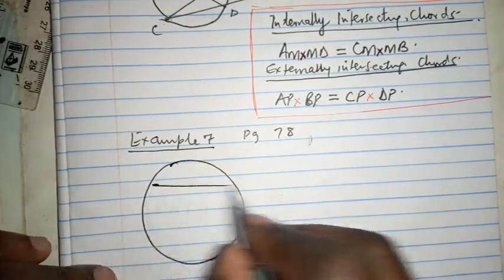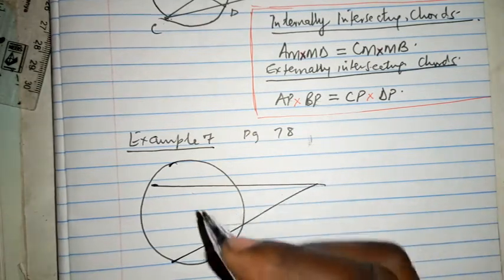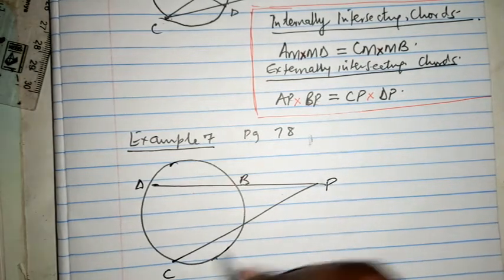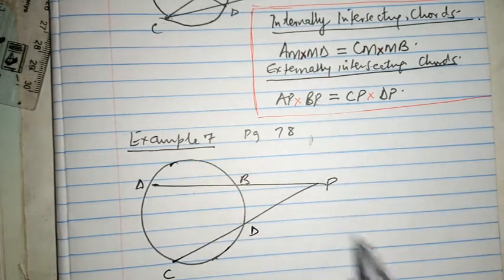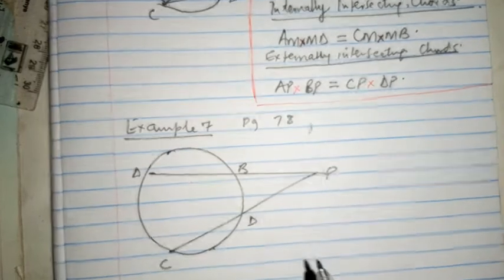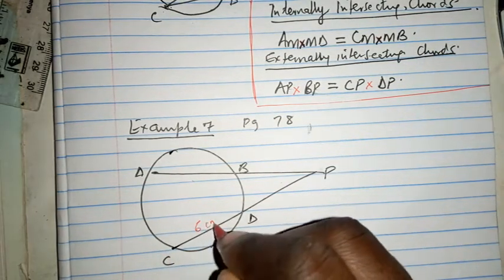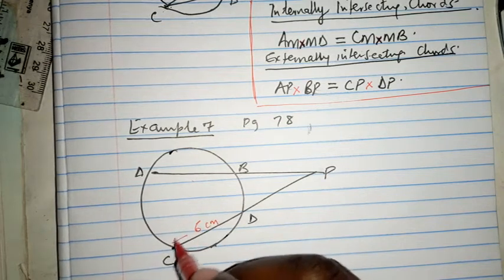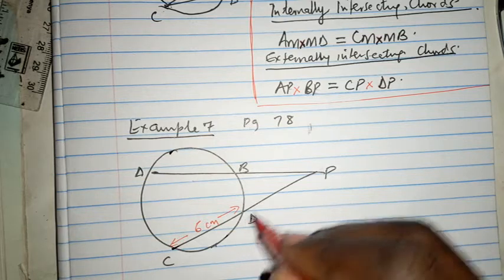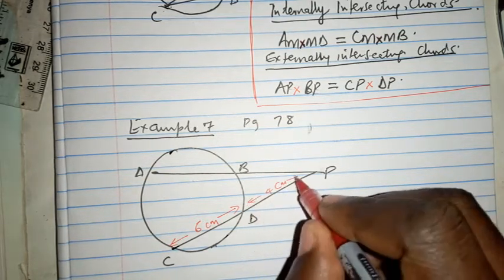What are we saying there? There is a diagram there, and these are two externally intersecting chords. That is chord AB produced to P, and chord CD produced to P. We have given some detail: CD is six centimeters, DP is four centimeters, and BP is five centimeters.